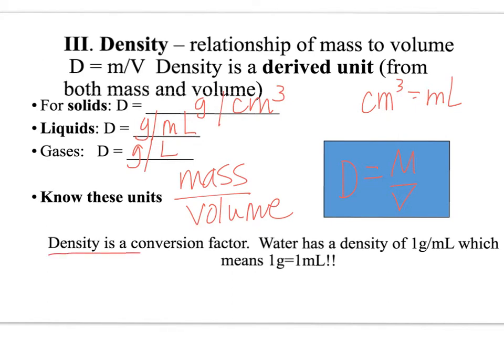Also, the other thing that we will be using is density is a conversion factor, meaning we can use it either one gram is equal to one milliliter or vice versa. So water has a density of one gram per milliliter. You need to know this. We will use this throughout the year, which means that one gram of water is equal to one milliliter. So I can write this conversion factor like this, one gram per milliliter, or I could say one milliliter per gram. Either way, it's one. So make sure you try to remember that. Matter of fact, you really need to know all three big things about water: that the density is one gram per milliliter, that it boils at 100 degrees Celsius, and that it freezes at zero degrees Celsius.